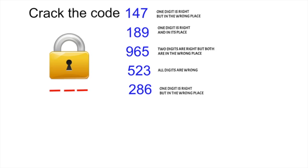In the first code, 147, only one digit is right. So let's write here one digit. 189, one digit is right and in its place. In 965, two digits are correct, so we write 2.